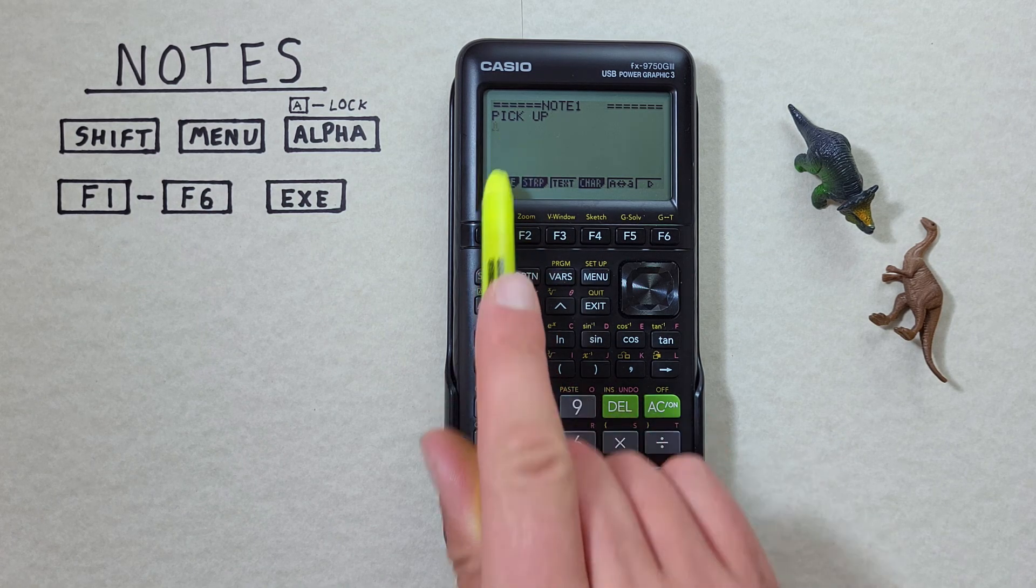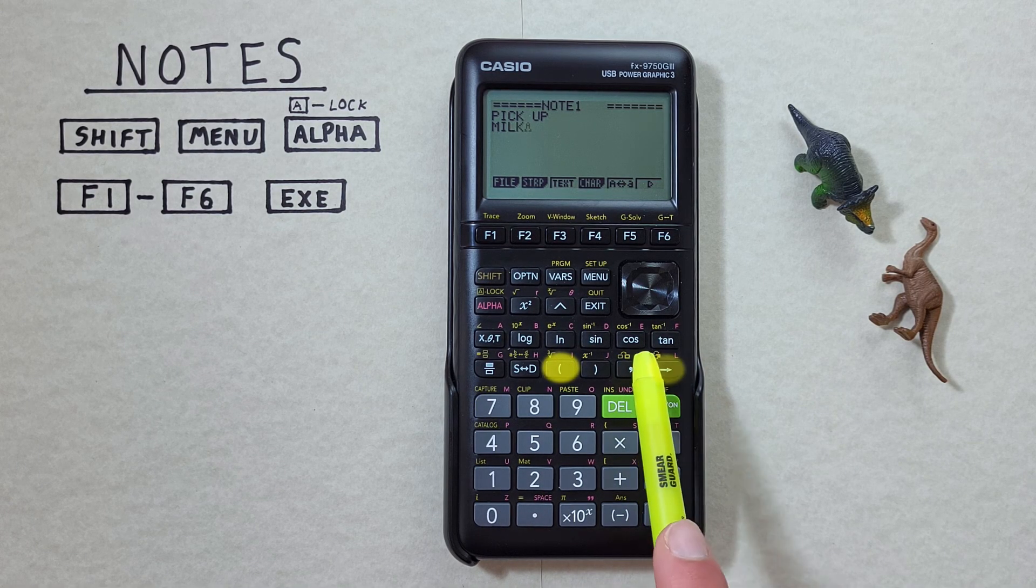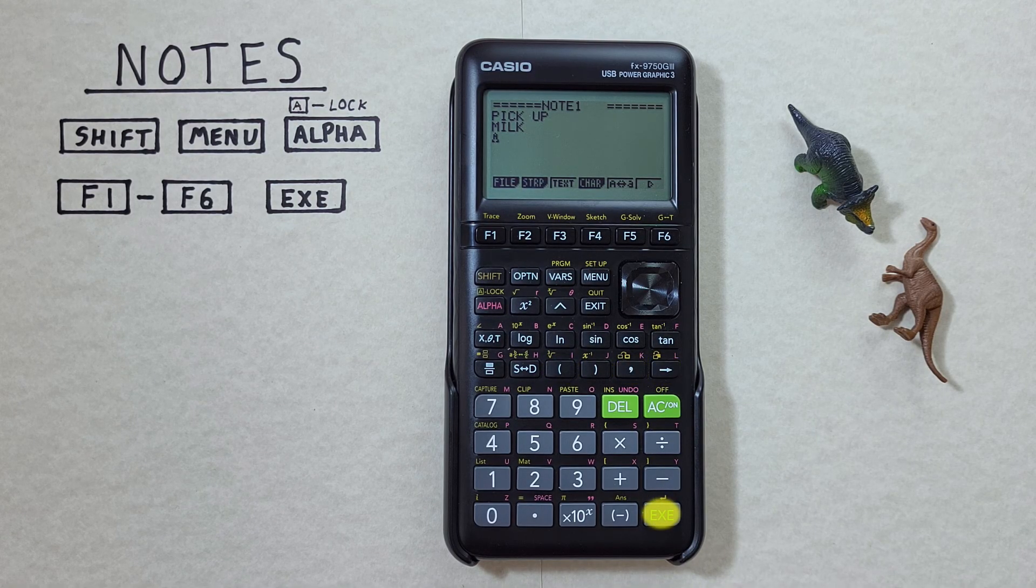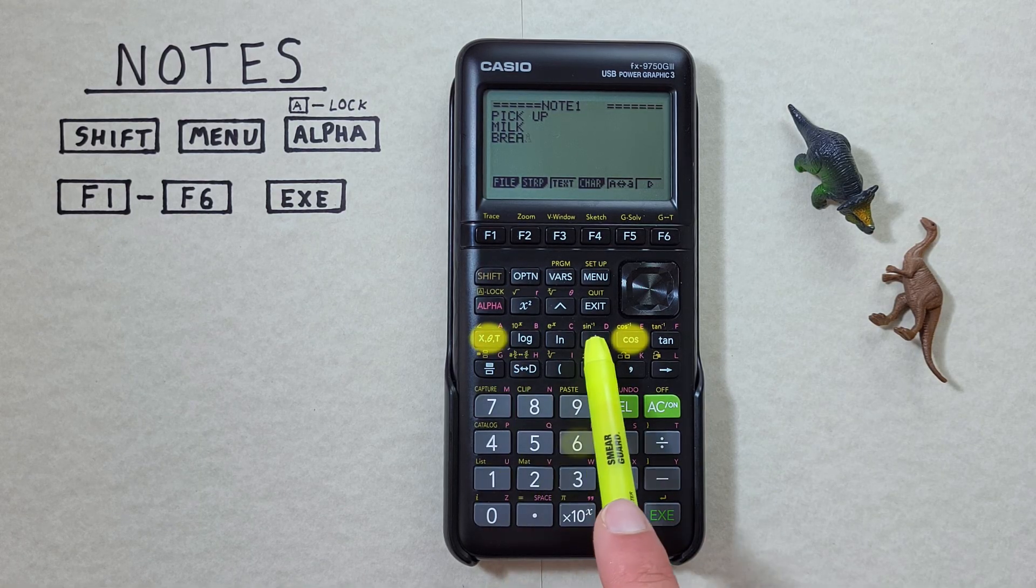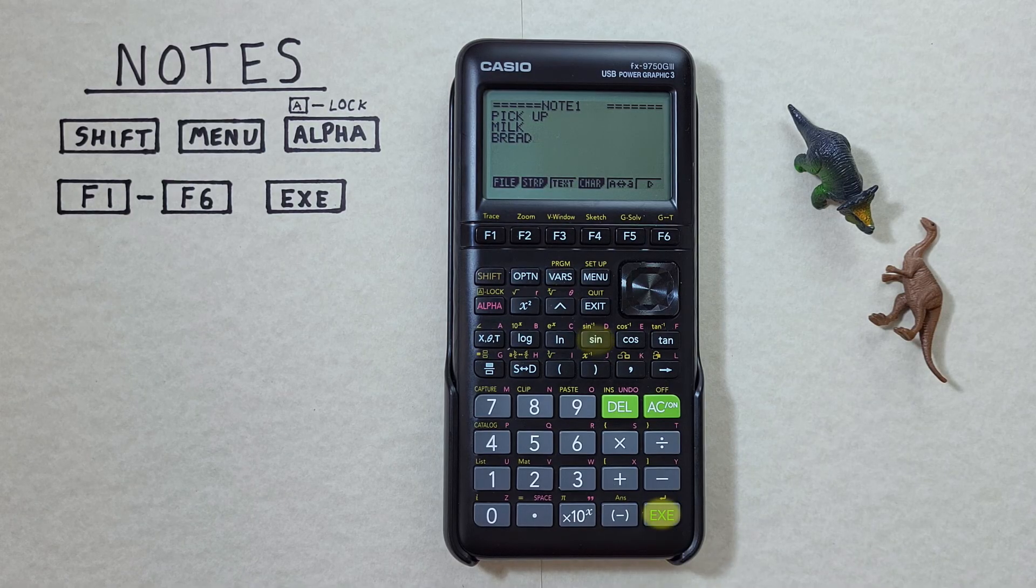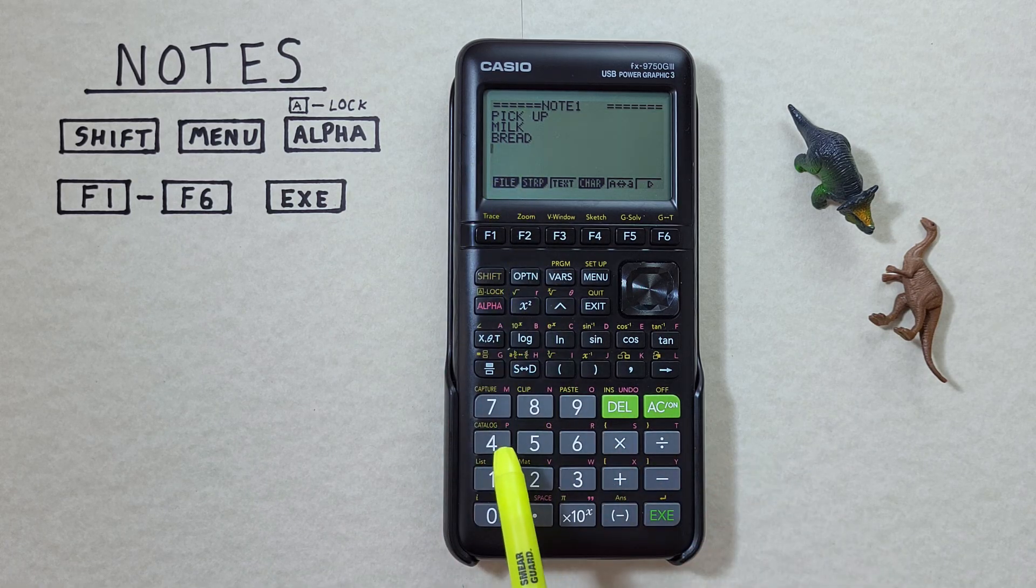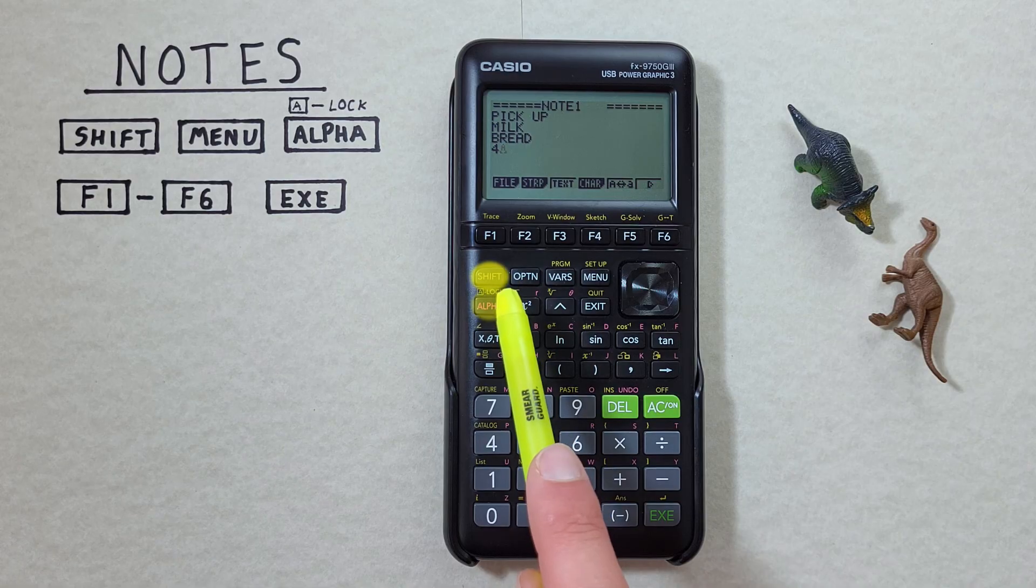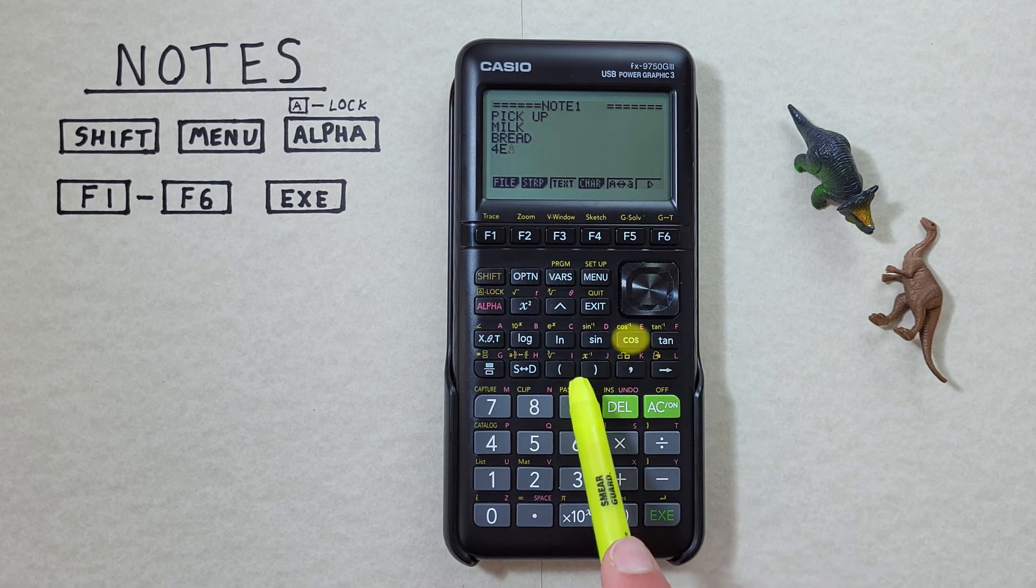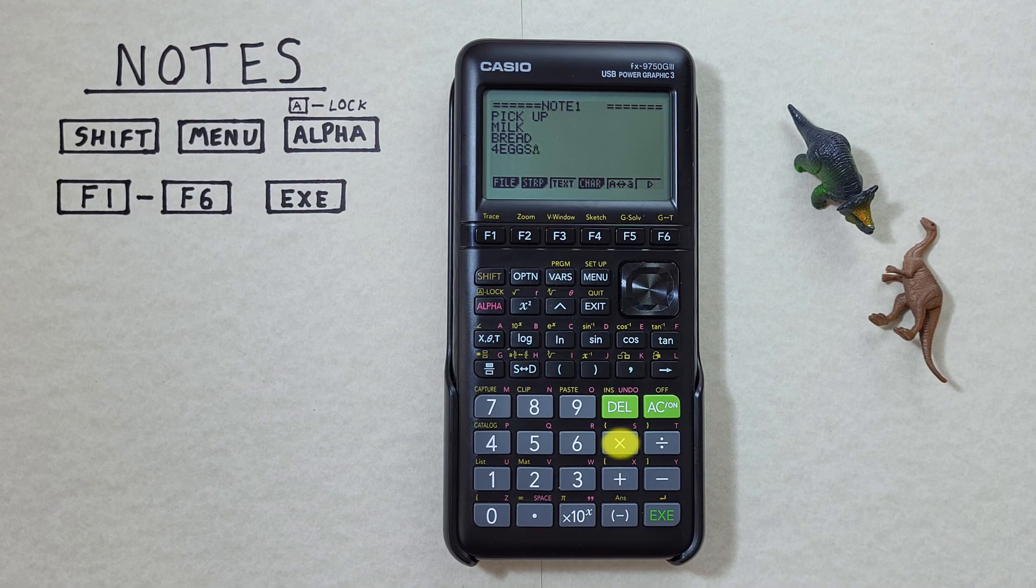You see our cursors move down. We need to remind ourselves to get milk. Bread. And four eggs. So to get numbers again we press the alpha key. Our cursor goes back to the normal one. We hit four. And then we turn back on the alpha lock with shift alpha eggs. There we go. We've entered our list.